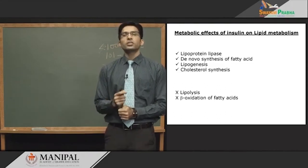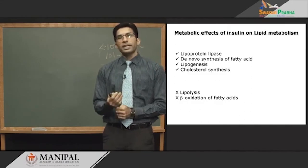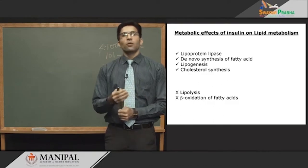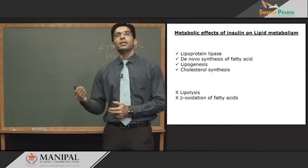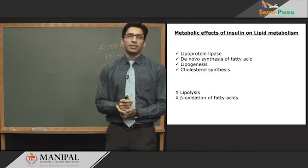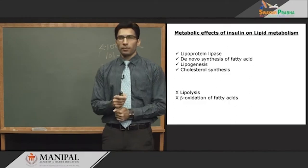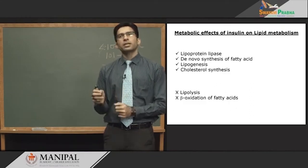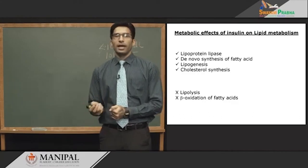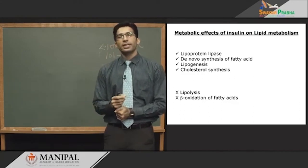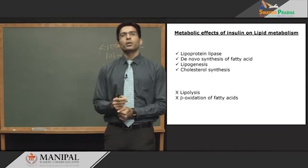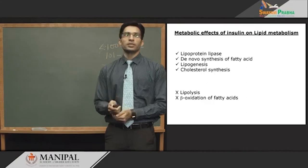Insulin indirectly stops beta-oxidation of fatty acid. When we are synthesizing fatty acid by de novo synthesis, we don't want that fatty acid to be degraded. This is prevented by the first product of the fatty acid synthesis pathway — malonyl-CoA — which inhibits the gateway of the mitochondria, carnitine palmitoyltransferase-1 (CPT1), not allowing any fatty acid to enter the mitochondria and undergo beta-oxidation.